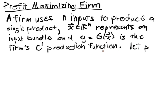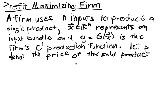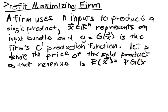Let p denote the price of the sold product, so that revenue R(x) equals p times g of x. So just a simple, straightforward model.